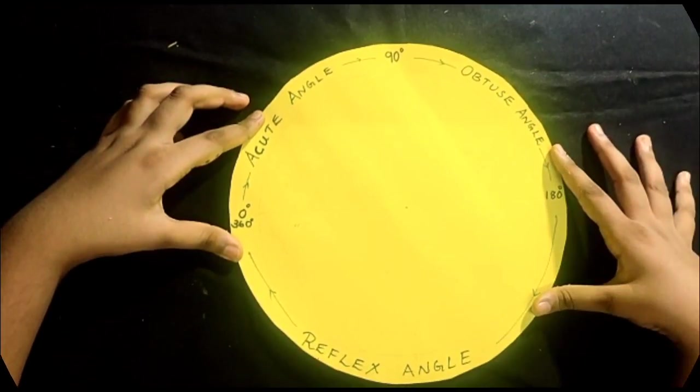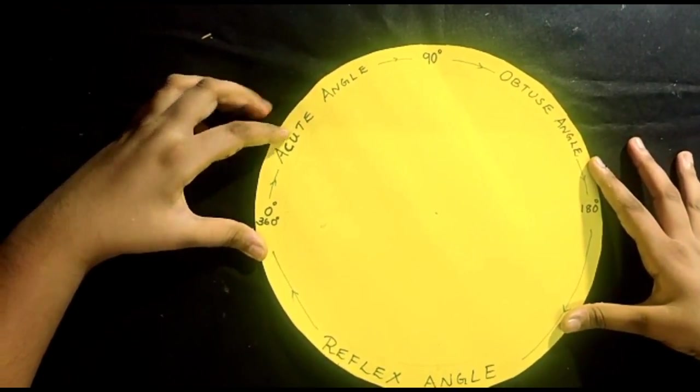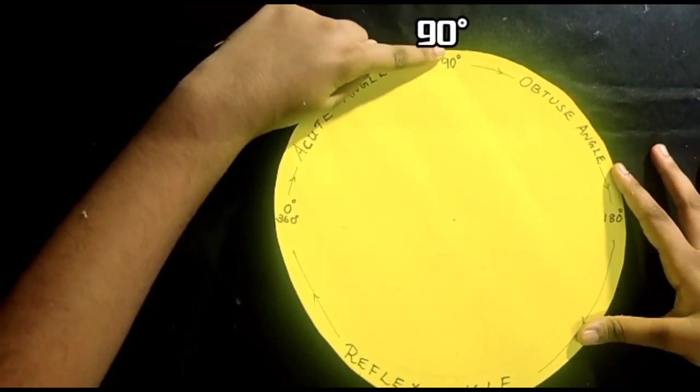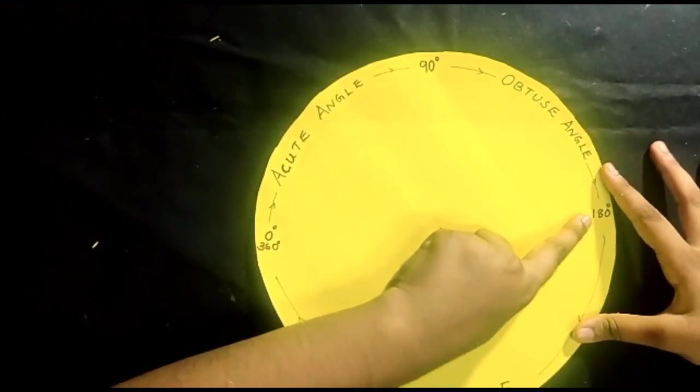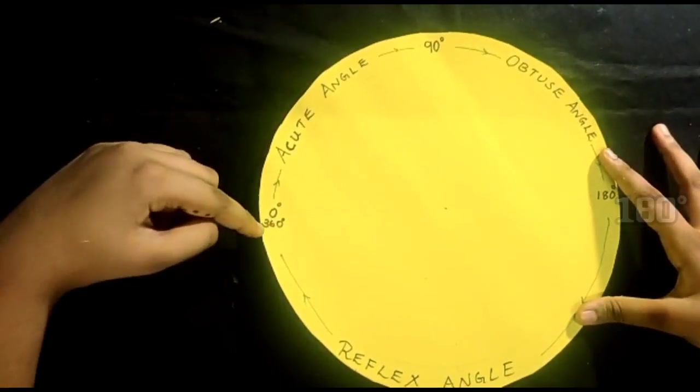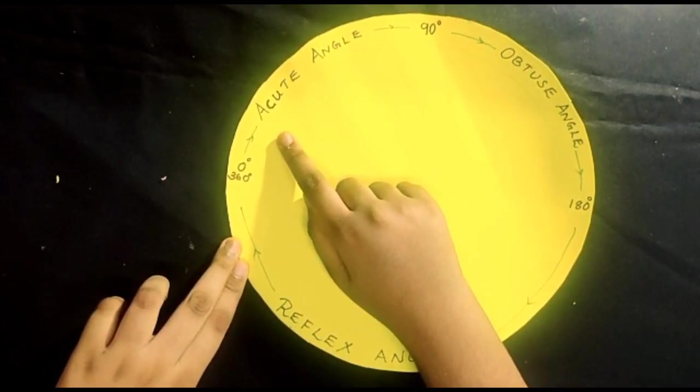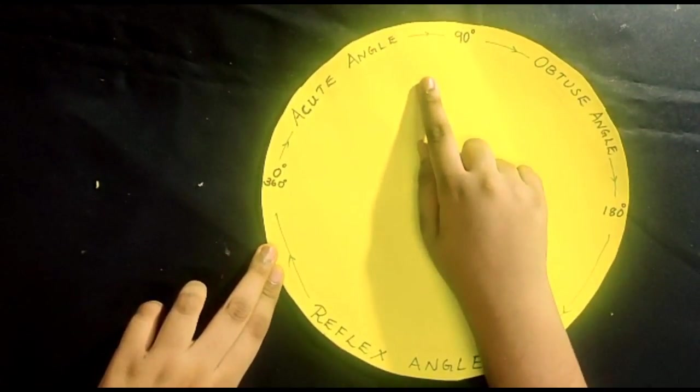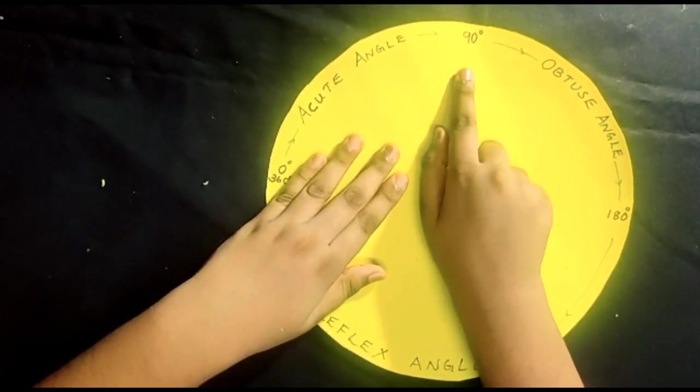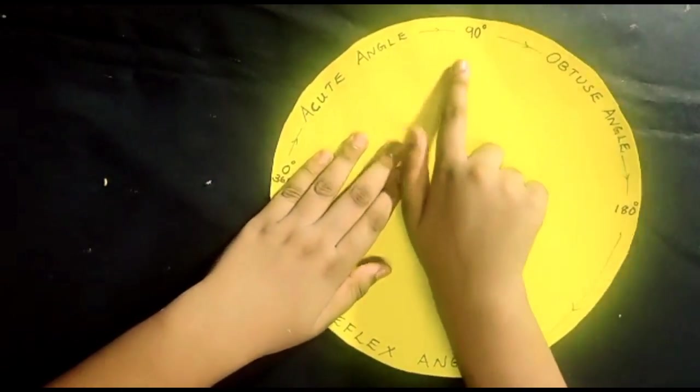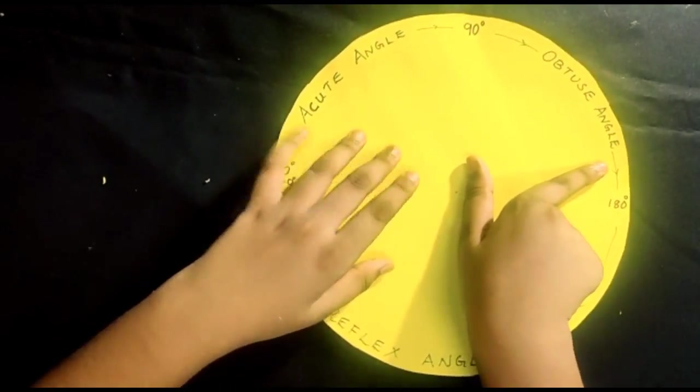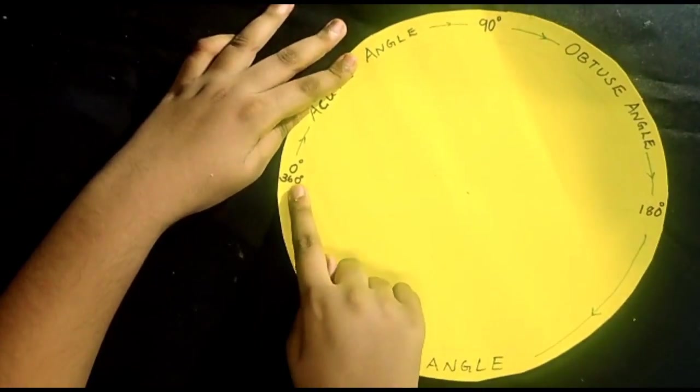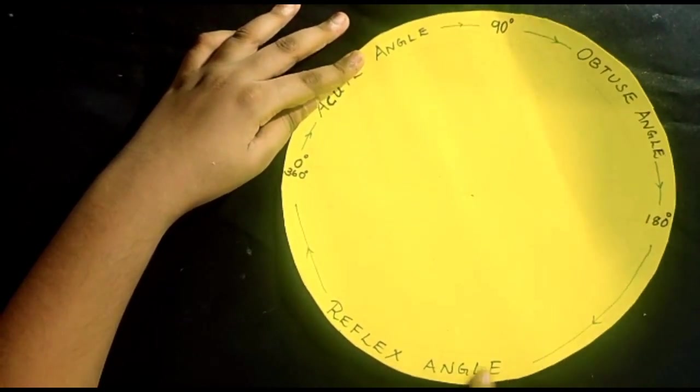On the circle, you have to mark 0 degree, 90 degree, 180 degree and 360 degree. Between 0 and 90 degree, mark acute angle. Between 90 degree and 180 degree, mark obtuse angle. Between 180 degree and 360 degree, mark reflex angle.